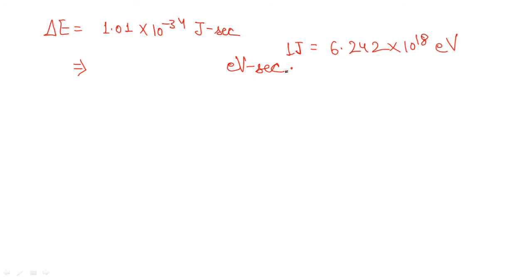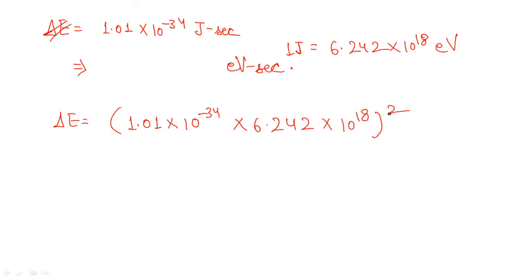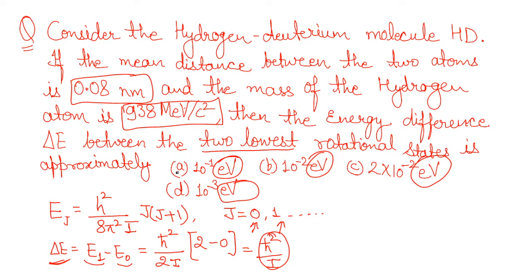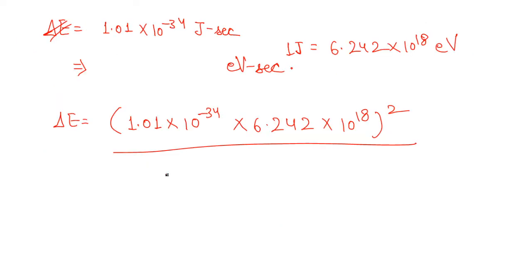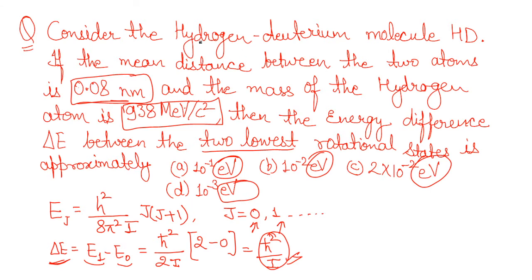Now write the full expression for ΔE: ΔE = ℏ² / I, where ℏ = 1.01 × 10⁻³⁴ J·s (multiplied by 6.242 × 10¹⁸ for eV conversion), squared in the numerator. In the denominator, I = μr², where r is the mean distance given as 0.08 nanometers, so r = 0.08 × 10⁻⁹ m, and we write r² = (0.08 × 10⁻⁹)².